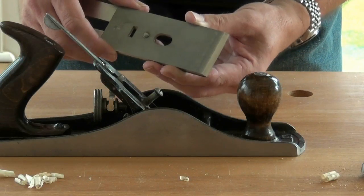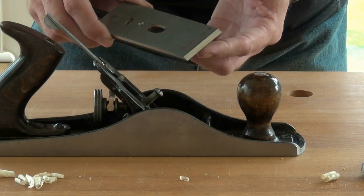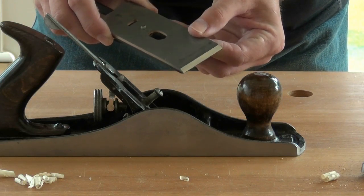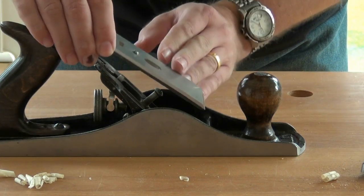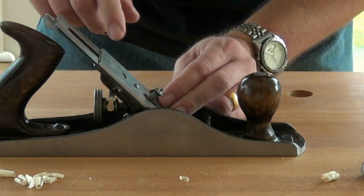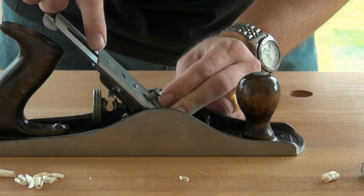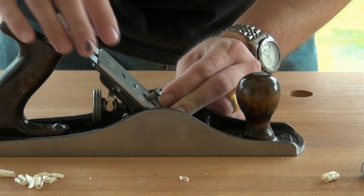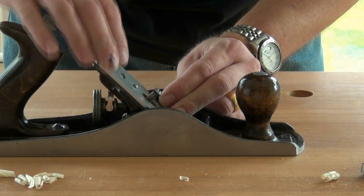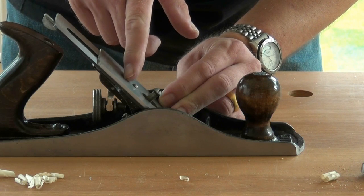Now we can put the chip breaker and iron back into the plane, just being careful not to touch the edge of the blade against anything where we might chip it. Make sure that the lateral adjuster is engaged in the slot in the blade and that the depth of cut adjuster is located in the slot of the chip breaker.